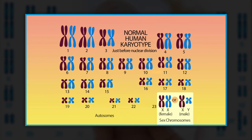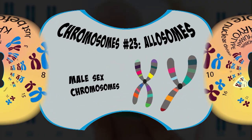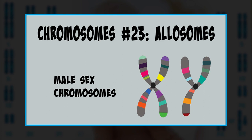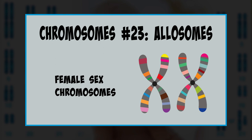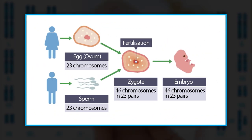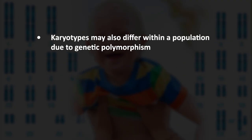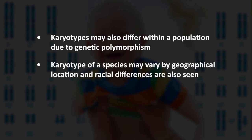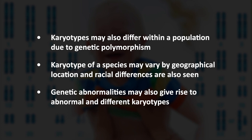Karyotypes are shared by organisms of the same species, but intraspecies variations exist. The karyotypes of males and females may differ — in humans, males have XY while females have XX. There are also karyotype differences between somatic cells and gametes; sperm and egg cells each contain half the number of chromosomes and only make a complete cell of 46 when they combine during fertilization. Karyotypes may also differ within a population due to genetic polymorphism, geographical location, and racial differences. Genetic abnormalities may also give rise to abnormal karyotypes.